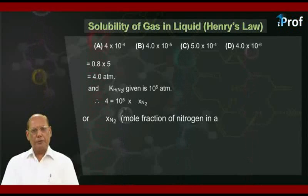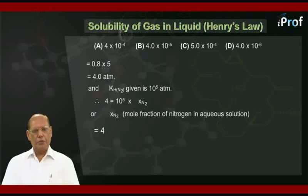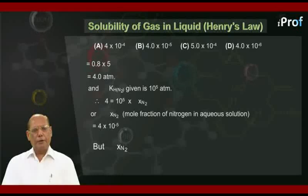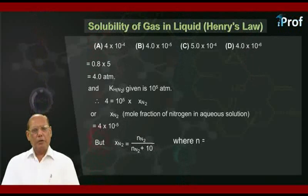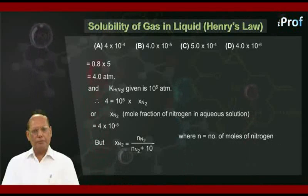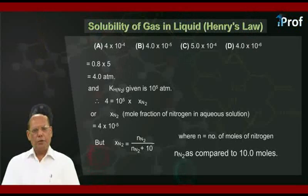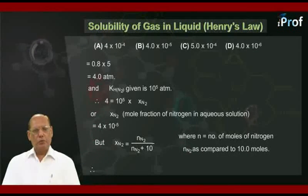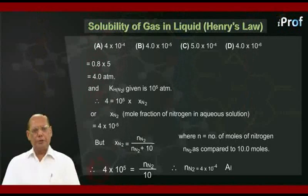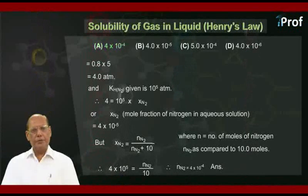x(N₂), the mole fraction of nitrogen in aqueous solution, on calculation comes out to be 4 into 10 to the power minus 5. We know that mole fraction of nitrogen equals nN₂ divided by nN₂ plus 10, where n means number of moles of nitrogen and 10 stands for the number of moles of water. Since nN₂ is very small, it can be neglected in comparison to 10. So, we can write 4 into 10 to the power minus 5 equal to nN₂ divided by 10, giving number of moles of nitrogen equal to 4 into 10 to the power minus 4. So option A becomes the answer of this question.